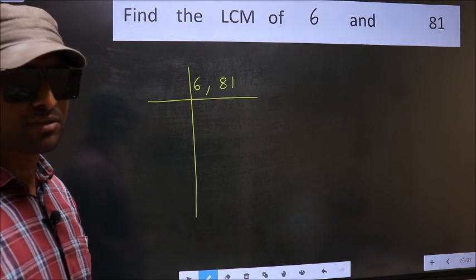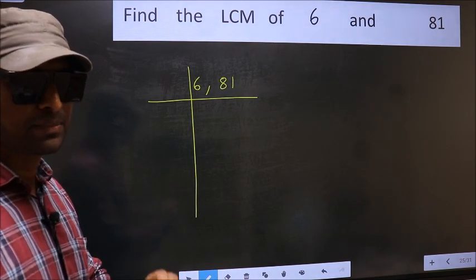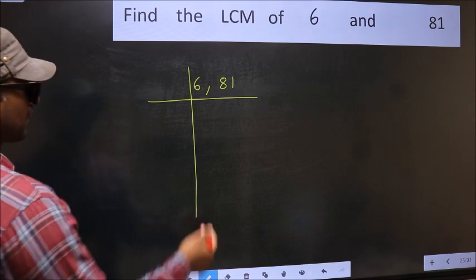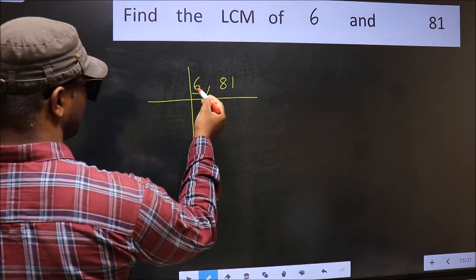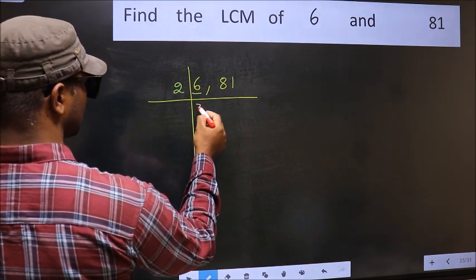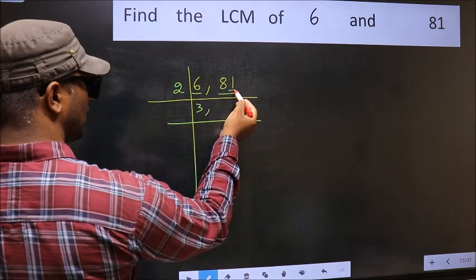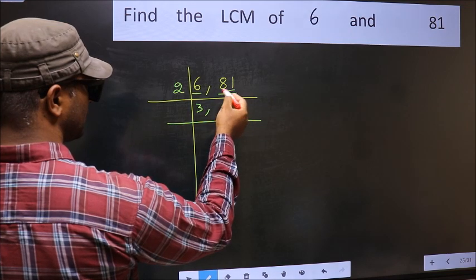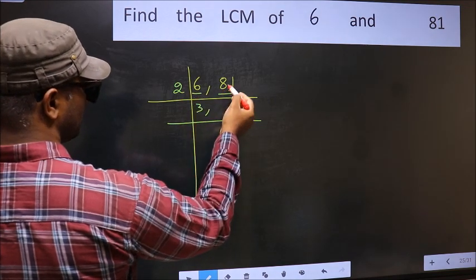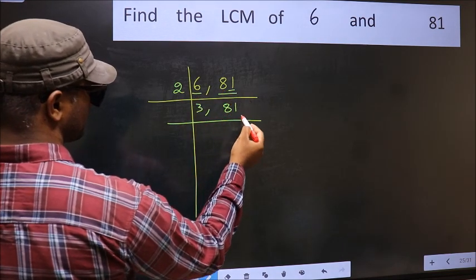Now focus on the first number, which is 6. 6 is divisible by 2: 2, 3, 6. The other number 81 has last digit 1, not even, so this is not divisible by 2. Write it down as it is.